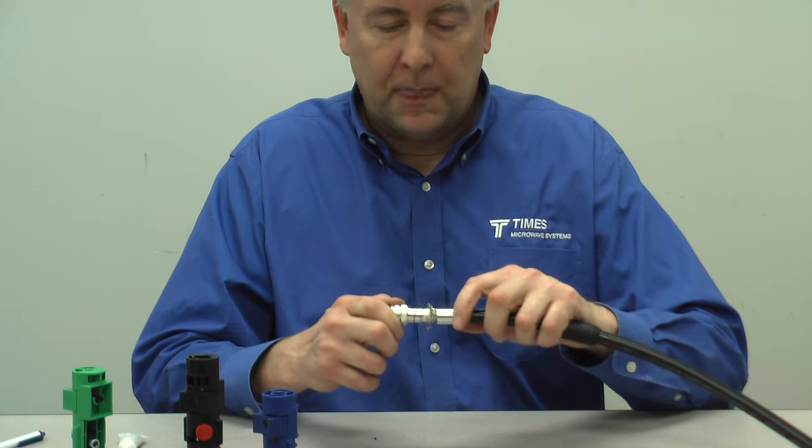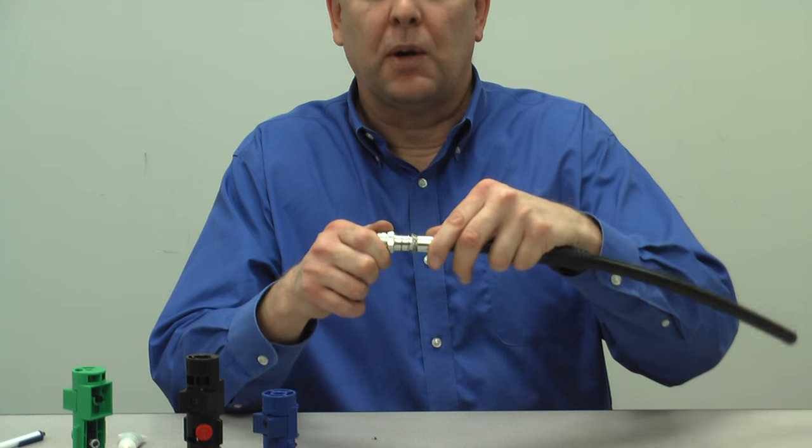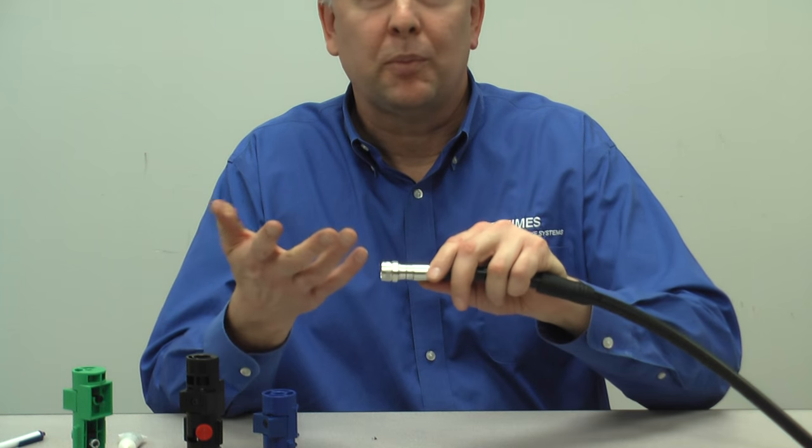Now you take the ferrule, slide it right back up and you notice the braid is right where you want it to be. There's no need to trim with a pair of scissors.